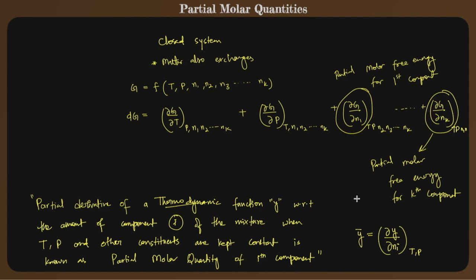Remember that this partial molar quantity is the change in Y when one mole of component i is added to the system. That is the significance of it — the partial molar quantity tells us what is the change in Y, which can be any thermodynamic function like Gibbs free energy or internal energy, when one mole of Ni is added. If expressed against N1, it's when one mole of N1 is added; against N2, when one mole of N2 is added.